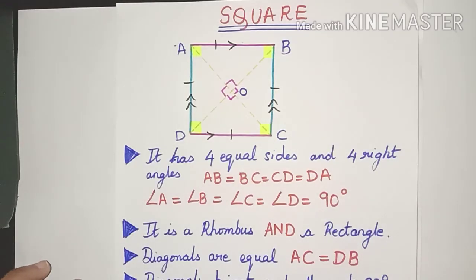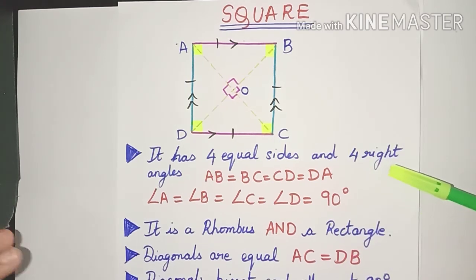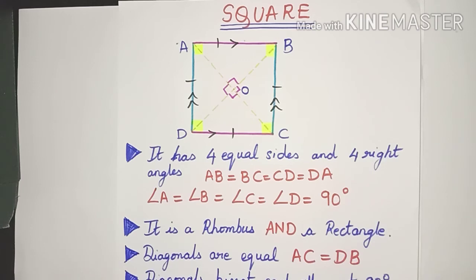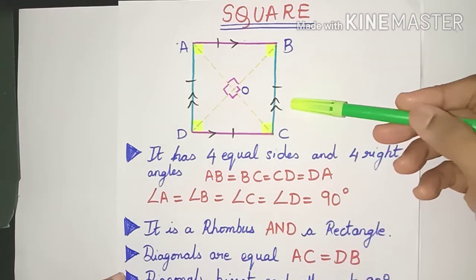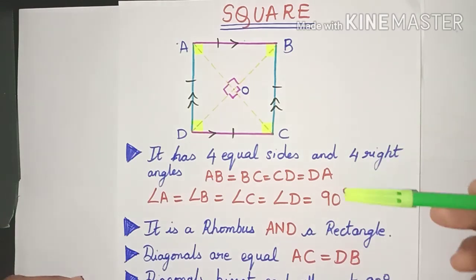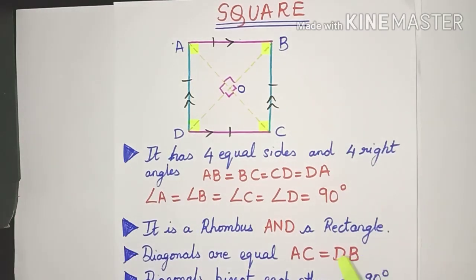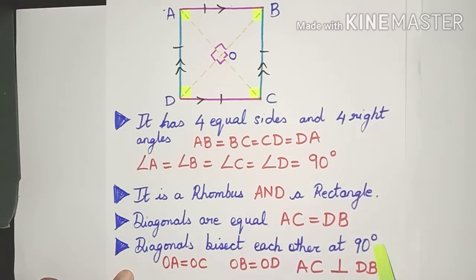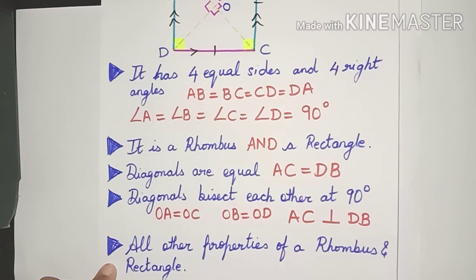The next type of parallelogram is a square. A square is that parallelogram which has four equal sides and four right angles. It is actually a combination of a rhombus and a rectangle — a rhombus has all sides equal and a rectangle has all angles as 90 degrees. An important property is that the diagonals are equal to each other, and the diagonals bisect each other at 90 degrees. All other properties of a rhombus and a rectangle are also shared by a square.